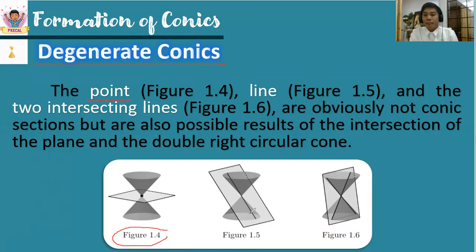If the plane passes through one of the lines in the generator, then in figure 1.5, we form a line. And in figure 1.6, the intersection of the plane and the double right circular cone creates two intersecting lines.